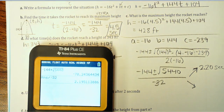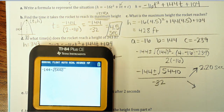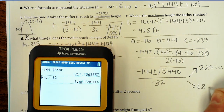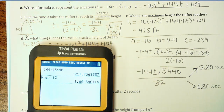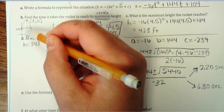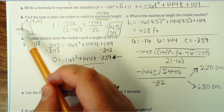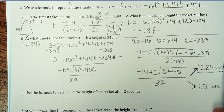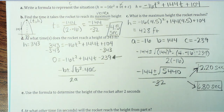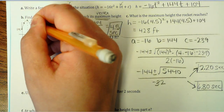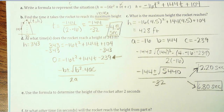Then I'm going to repeat the process: negative 144 minus the square root of 5440, hit equals, divide that by negative 32. This is about 6.80. Now, this is 4.5 seconds here at the top of my little sketch. So on the way up, we're going to hit that 343-foot mark somewhere, and then on the way back down we're going to hit it again. So there are two different times where the rocket reaches that height — it hits that height on the way up, and again on the way back down.